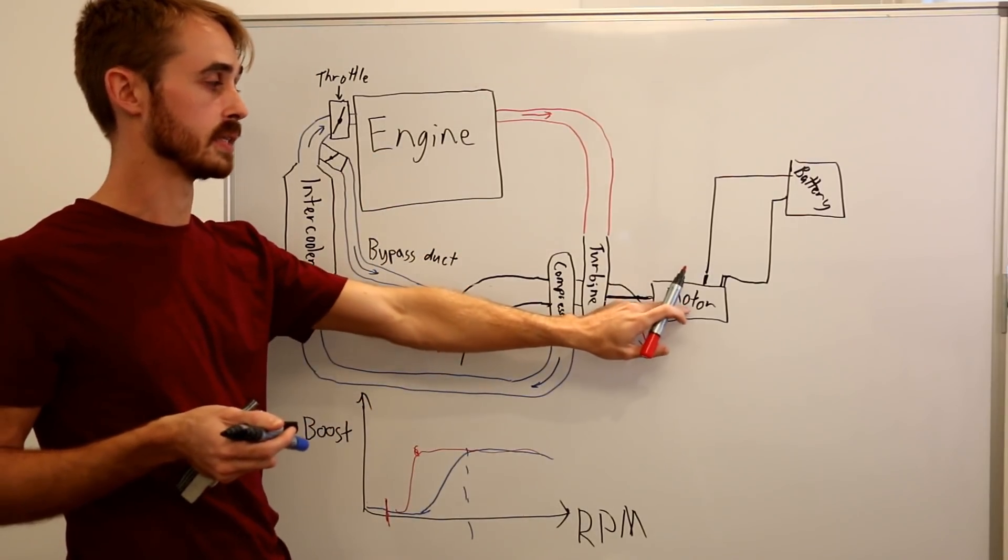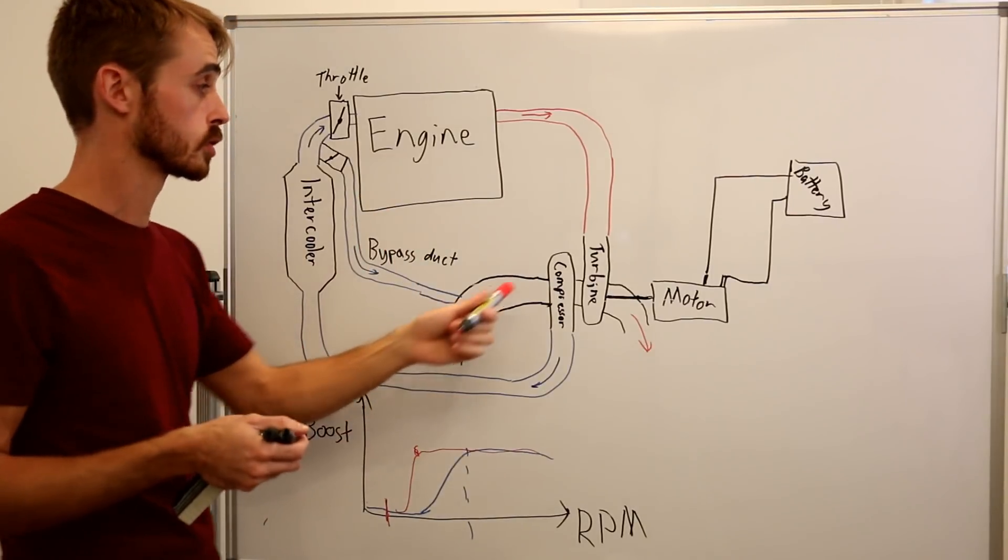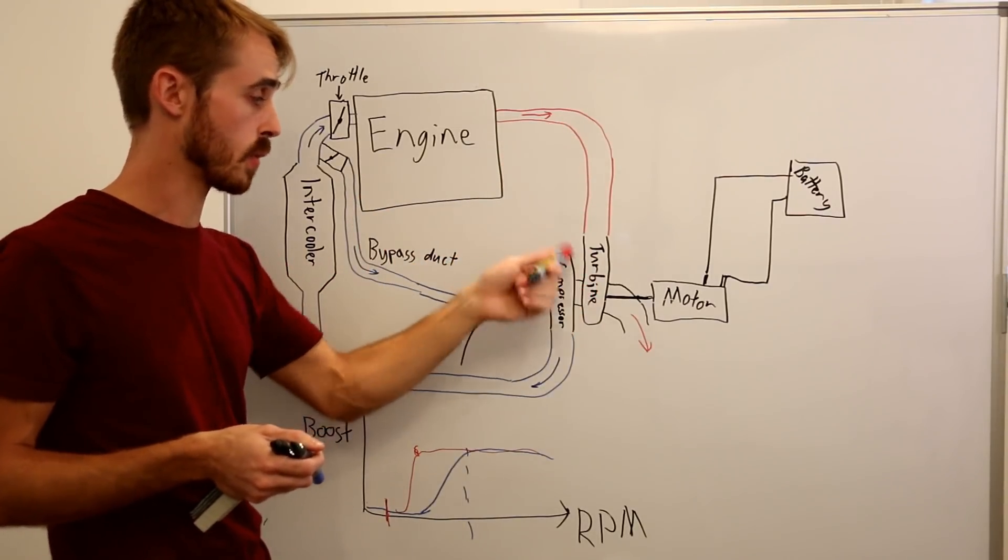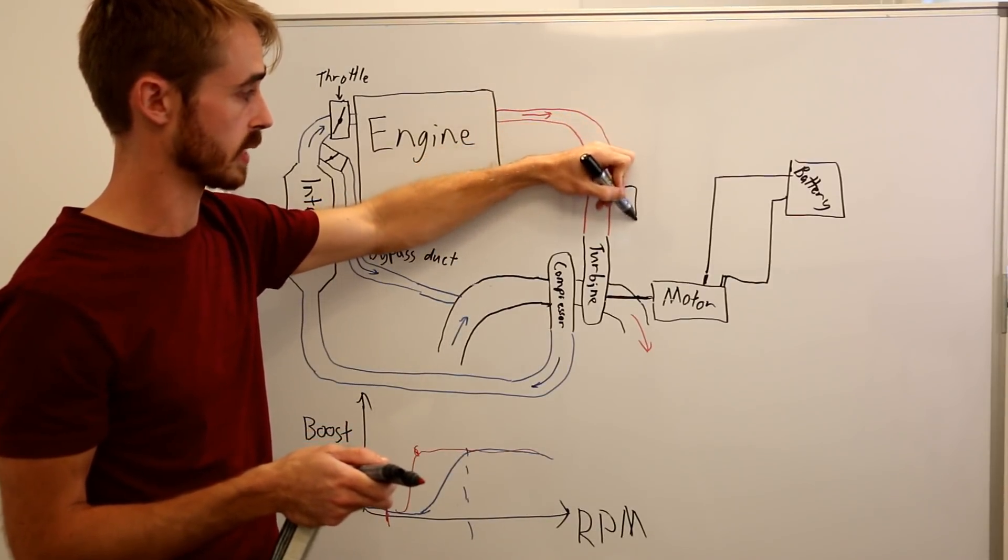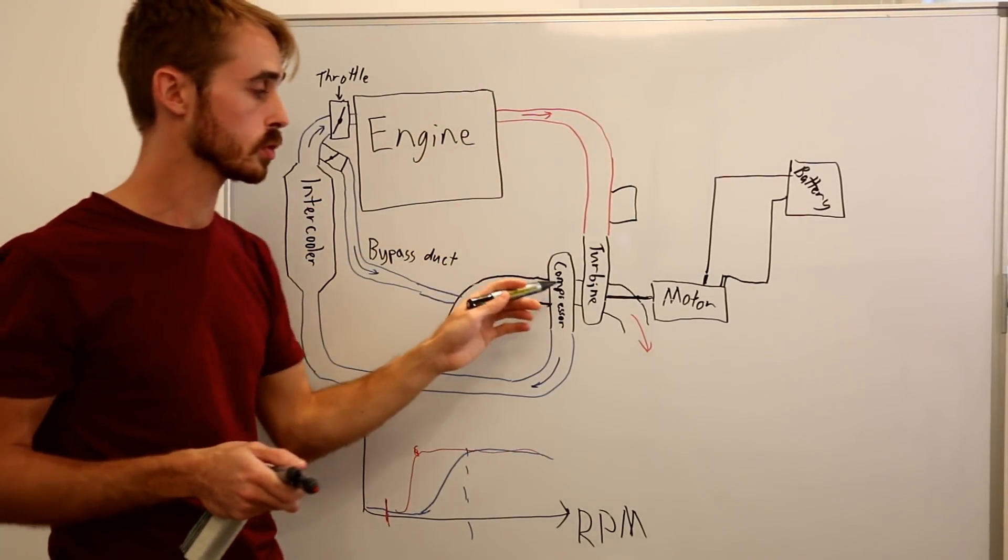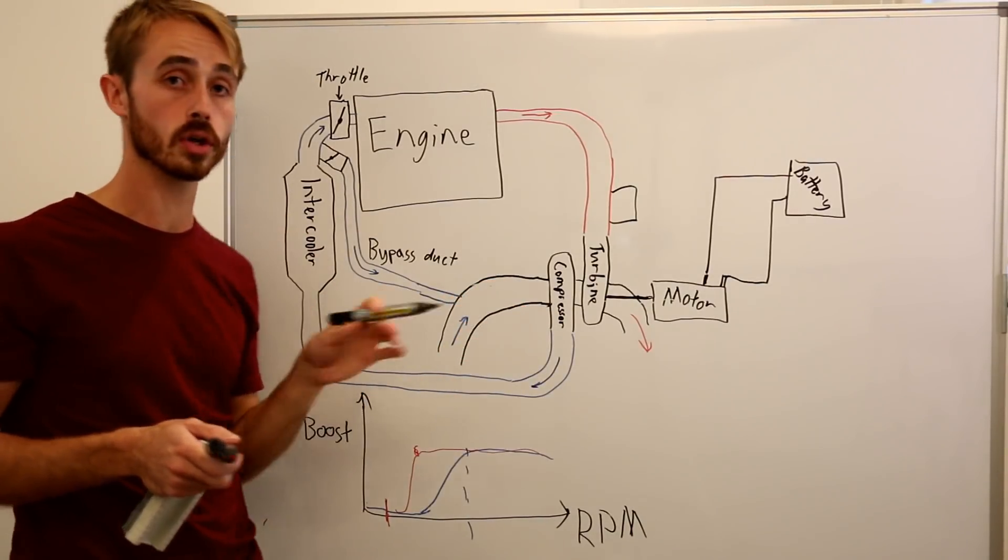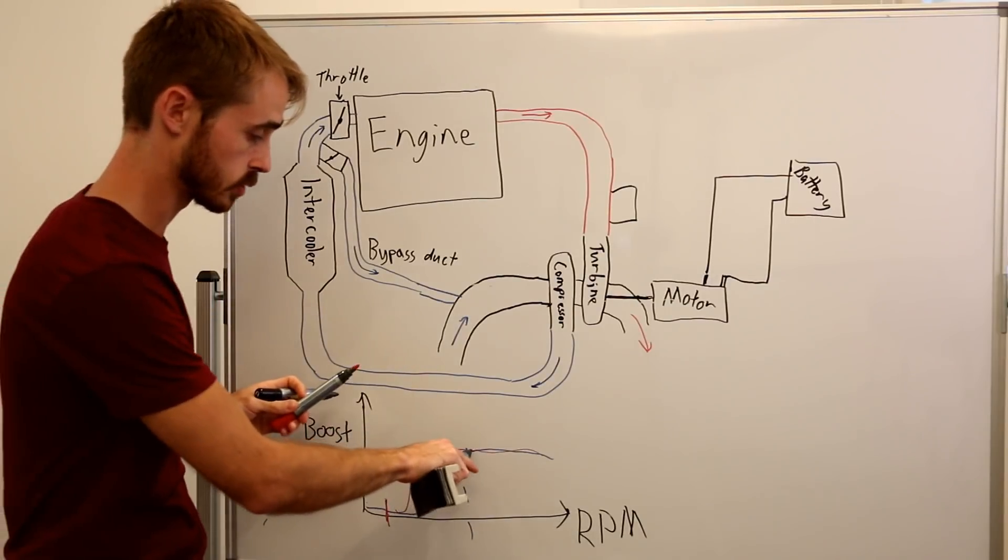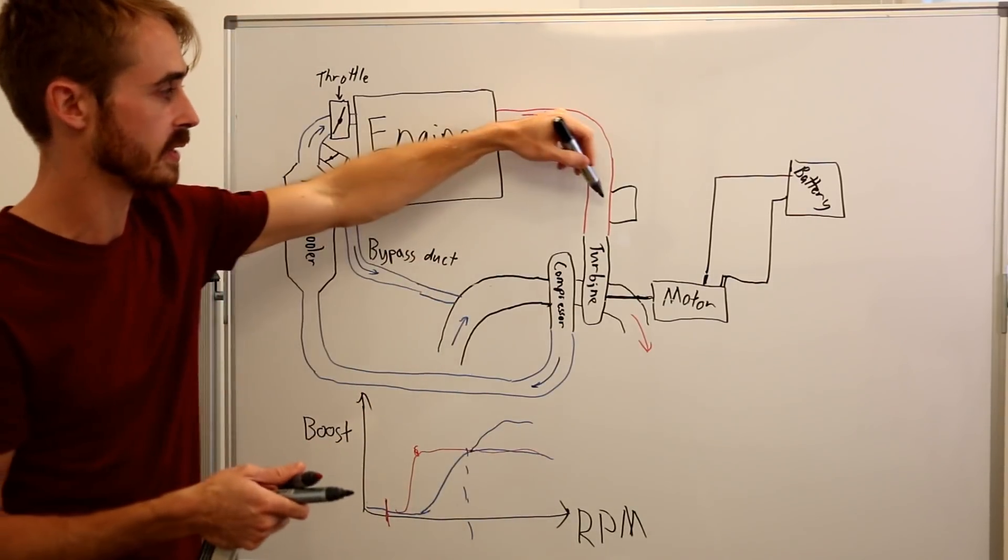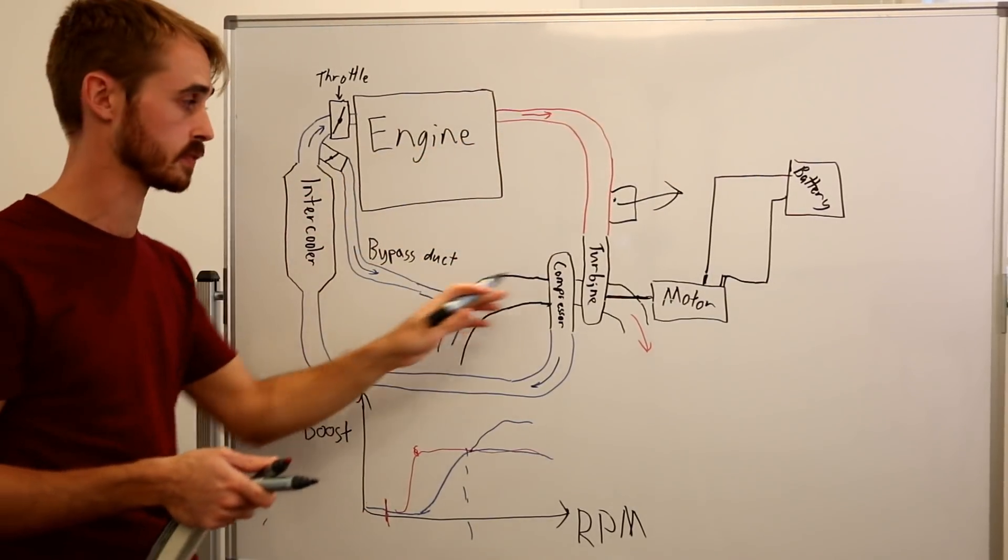So what happens here is this motor can also work as a generator. So if we have a regular turbo setup, what you'll normally have on the exhaust is something called a wastegate. And what this will do is if it senses that the compressor and the pressure circuit is over boosting, hitting more than the target boost, so let's say our boost curve is coming up here - our wastegate will open, allowing exhaust to vent to atmosphere.